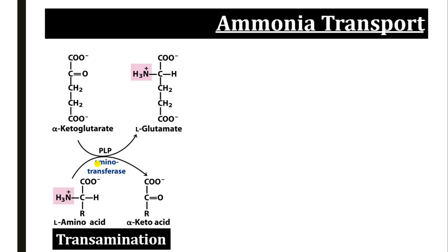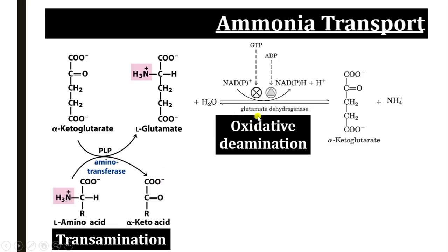Once glutamic acid forms in any tissue of the body, it will be transported to the liver, trapping the amino group of the amino acid. In the liver, it undergoes oxidative deamination with the help of glutamate dehydrogenase. By this process, L-glutamic acid removes its amino group and gets converted into alpha-ketoglutaric acid, and the ammonia is released and transported to the liver from all the tissues.